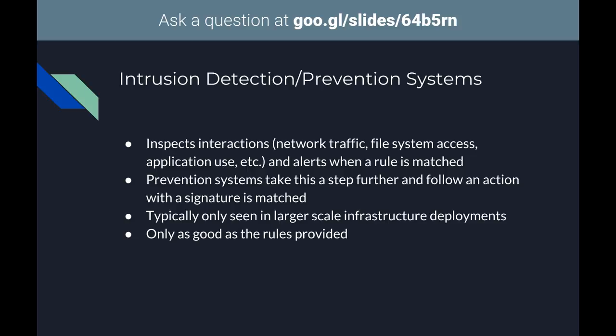This could be detecting malicious incoming traffic, or someone trying to log in as root on one of your boxes. A prevention system goes a step further and does something about it — generally stops the user from continuing. This is typically only seen in larger scale infrastructure deployments, and it's only as good as the rules provided.